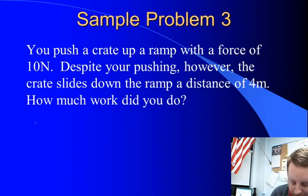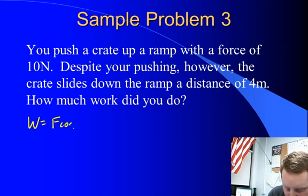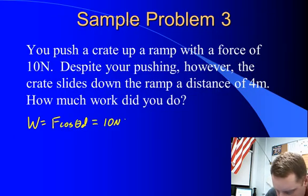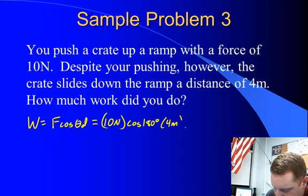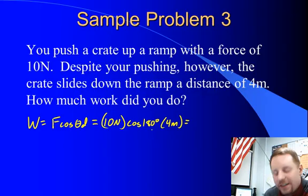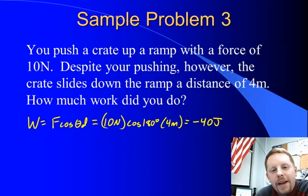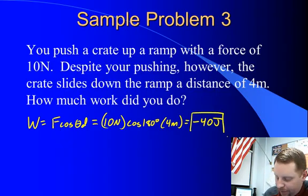So work, which is F cos theta times displacement, is going to be the force you applied, 10 newtons times the cosine of 180 degrees times the displacement of 4 meters. When I do all that, 10 times 4 is 40 newton meters or 40 joules, but cosine of 180 degrees is negative 1. So you actually did negative 40 joules of work. All that means is although you were pushing in one direction, the displacement was in the opposite direction. Negative 40 joules.